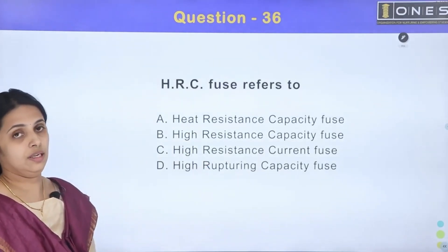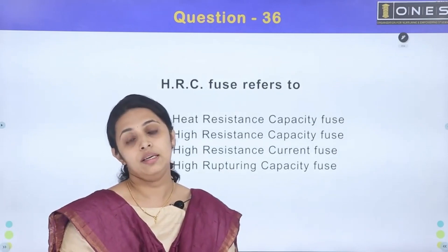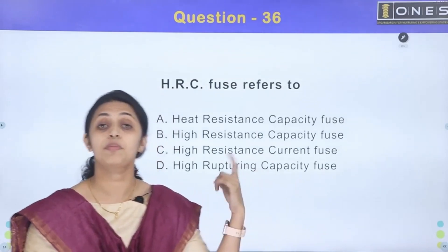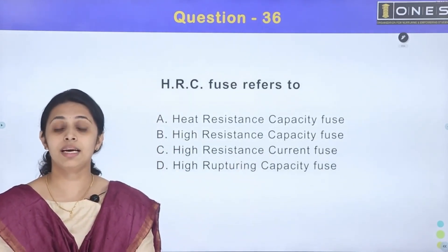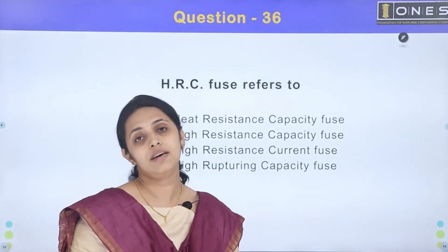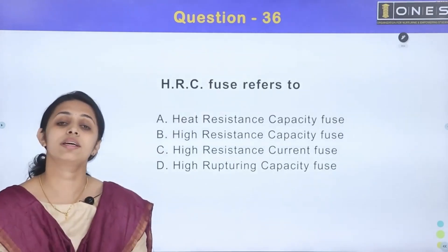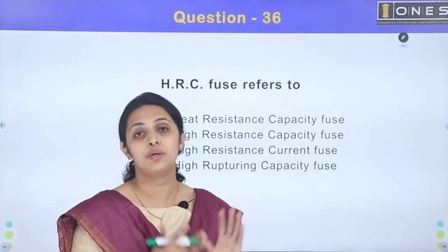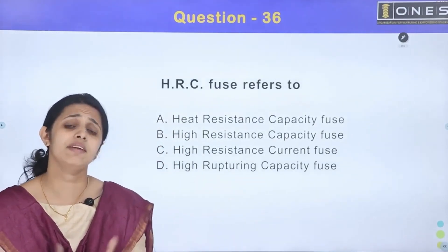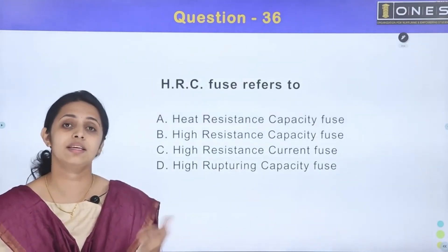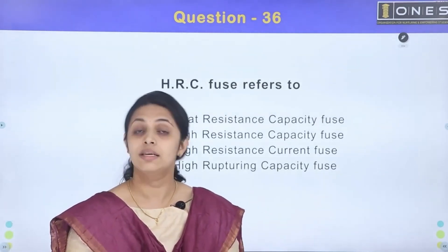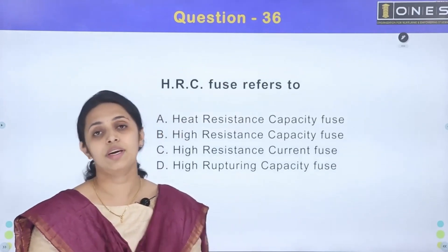The HRC Fuse is used when we pass a high fault current through the fuse, which causes it to melt. Two important factors for a fuse are low melting point and high conductance.